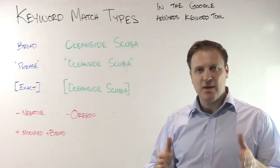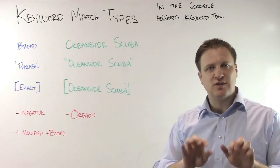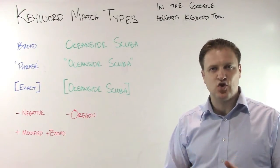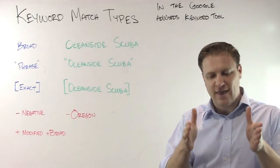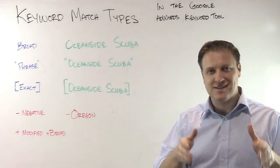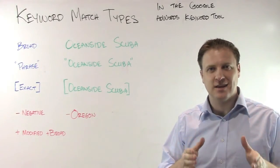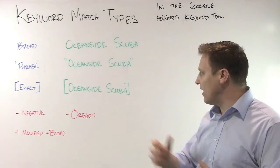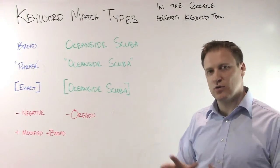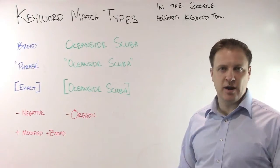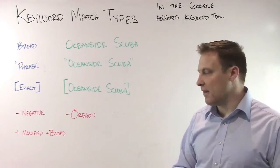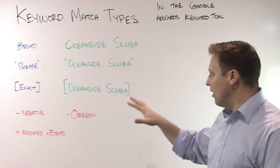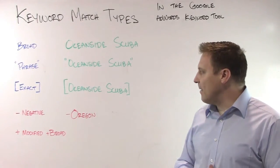Exact match is how many people type in just 'Oceanside scuba' with nothing before it, nothing after it — that phrase is exactly as it is written. 'Oceanside scuba,' nothing in the middle, not 'Oceanside California' — nothing like that. So that's exact match.